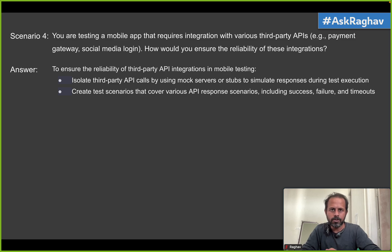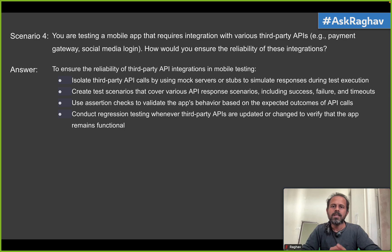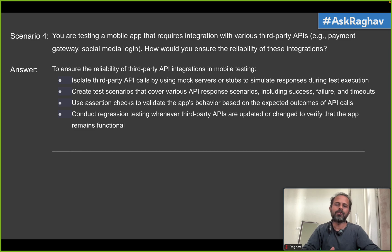Because we are dependent on third parties and don't have control over their servers, and also because you cannot do performance testing on any third-party without their permission, you mock these APIs using mocking services and stubs. Then you create scenarios that cover various API response scenarios, add assertions, and check for success and failure. You should validate the app's behavior based on expected outcomes of these third-party API calls. Whenever these APIs are updated, conduct regression testing to make sure your test scripts are still valid and working fine.